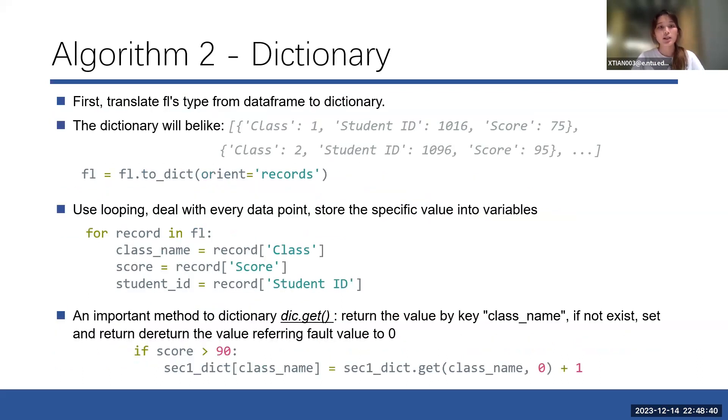In algorithm 2, I used dictionary. I first translated the file's type into dictionary, which is a big list including all the dictionaries. And then I used the looping technique to go through all the dictionaries inside and store the specific values into the variables.